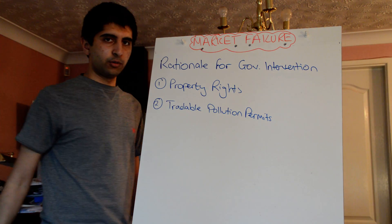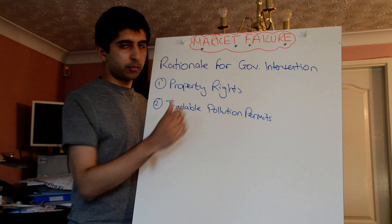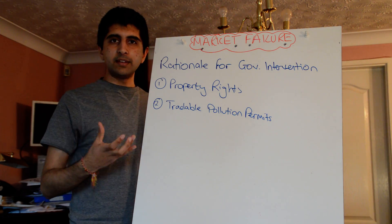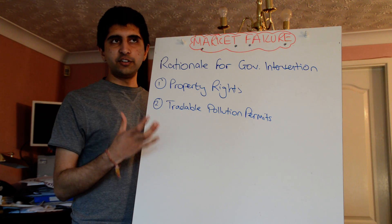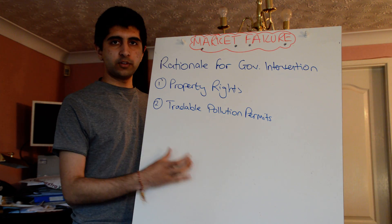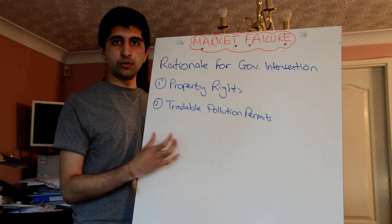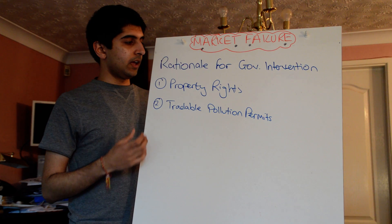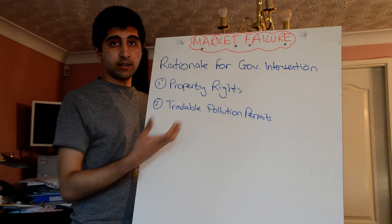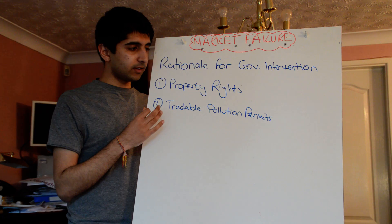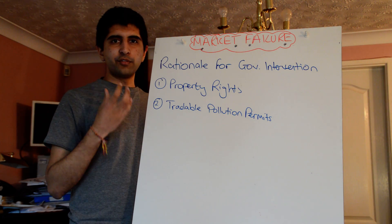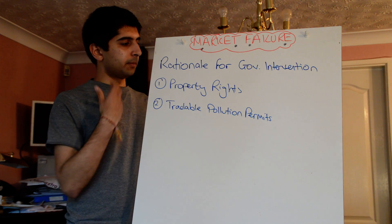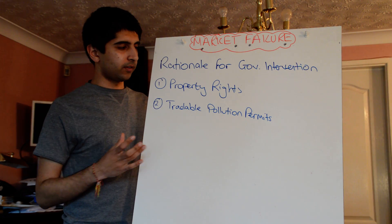We talked about allocating property rights. By allocating property rights, no matter which party receives them, the market can make itself as efficient as possible. We can get the quantity of pollution back to the Q-star level, which is where society wants it to be, just by allocating property rights. This is great because it's a market solution — the externality is internalised and there's no need for command and control methods by the government. The market can solve itself in the most efficient way.